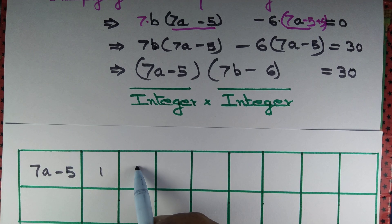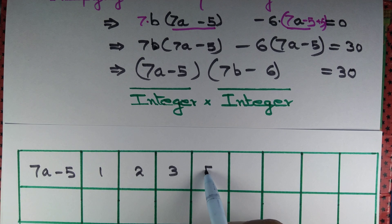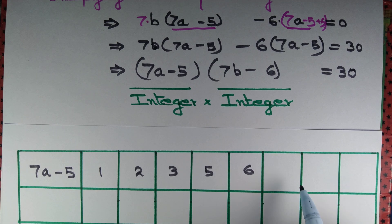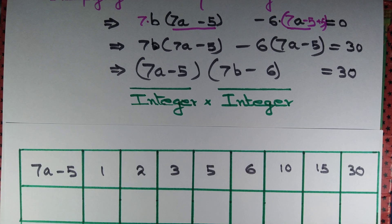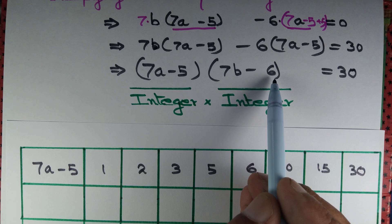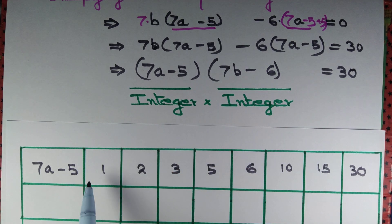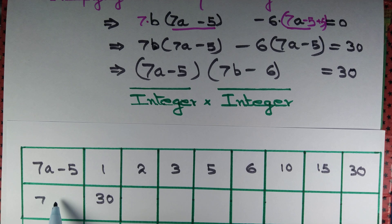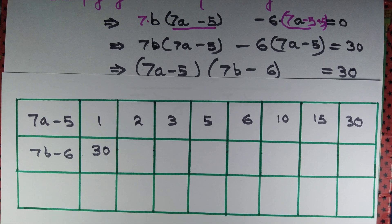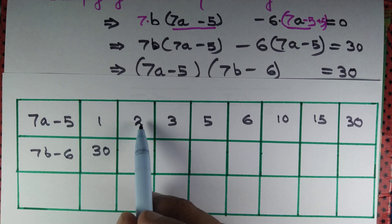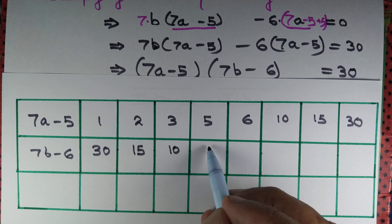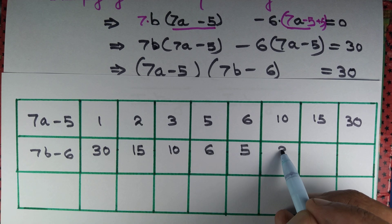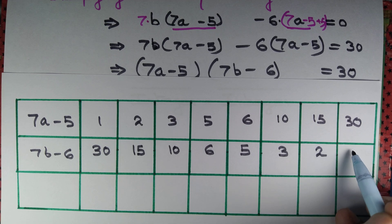The positive factors of 30 are: 1, 2, 3, 5, 6, 10, 15, and 30. The corresponding factor pairs (7a-5, 7b-6) with product 30 are: (1, 30), (2, 15), (3, 10), (5, 6), (6, 5), (10, 3), (15, 2), (30, 1).